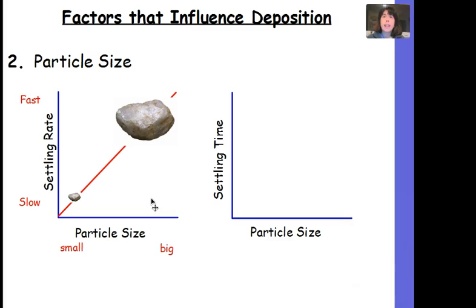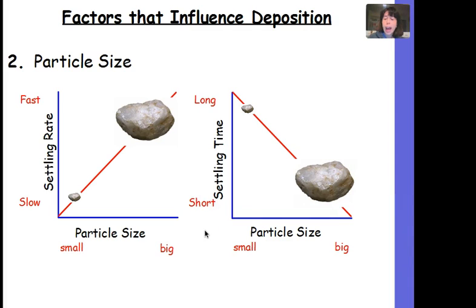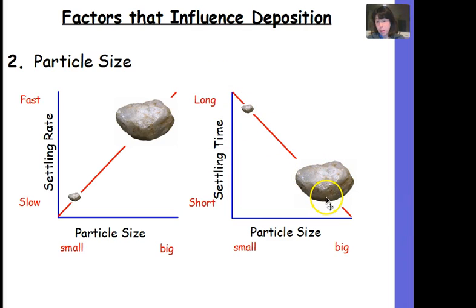Now, rate is different than time, so make sure when you see a graph like this that you respond to the question appropriately. Time is how long something takes — a short amount of time versus a long amount of time. So when graphing particle size versus settling time, you would have an inverse relationship instead of a direct one, since smaller particles take longer to settle and larger particles take a short time.